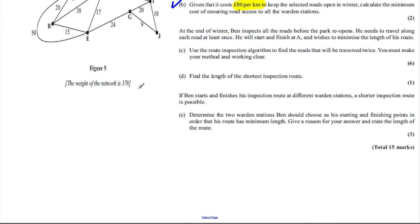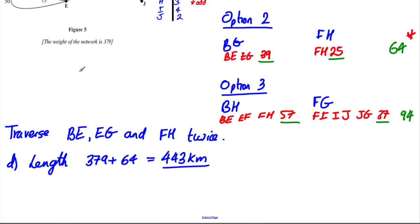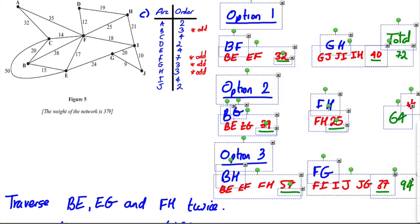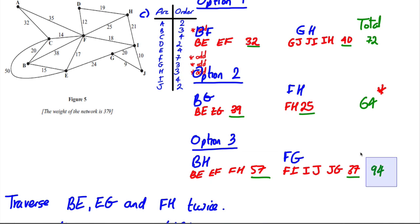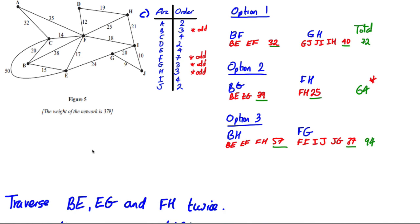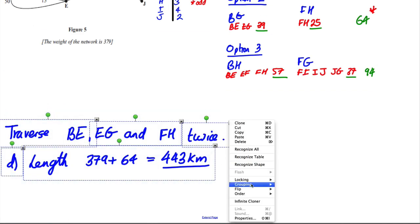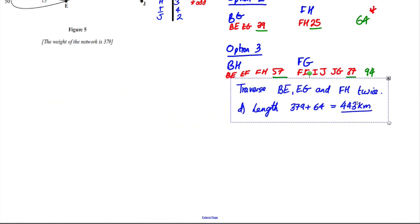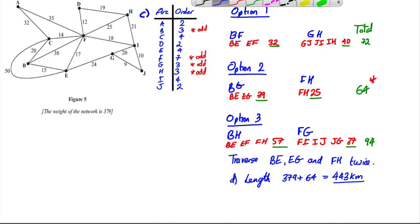Okay, last part, it says, if Ben starts and finishes at different warden stations, a shorter route is possible. Determine the two warden stations you choose to start and finish. Give a reason for your answer and state the length of the route. Okay, so going back to this one here. Okay, so for the next part, we know we can start and finish anywhere. Now, you can solve the Chinese postman problem by starting and finishing at an odd node. Okay, so you can leave two of the things that were originally odd, odds. You can leave two of B, F, G or H odd. So the question is, which two do you leave?